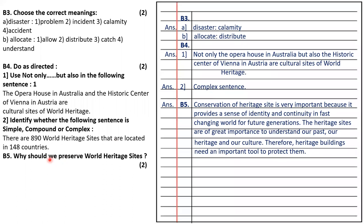The fifth question is why should we preserve world heritage sites. Conservation of heritage sites is very important because it provides a sense of identity and continuity in a fast-changing world for future generations. Heritage sites are of great importance to understand our past, our heritage and our culture. Therefore, heritage buildings need important tools to protect them.